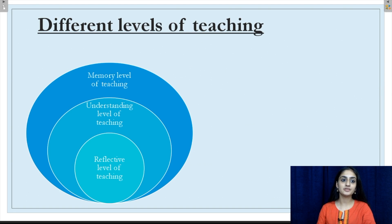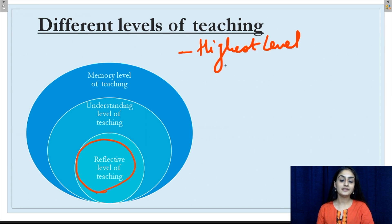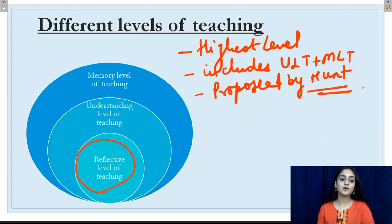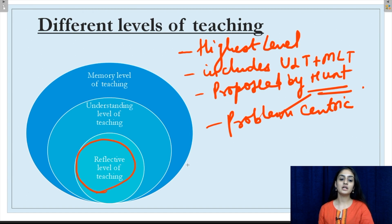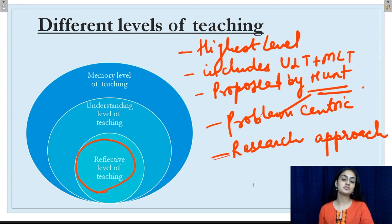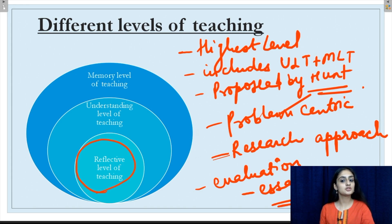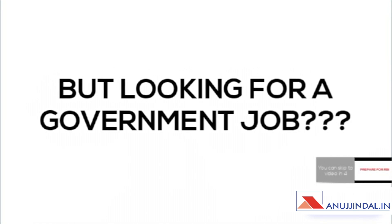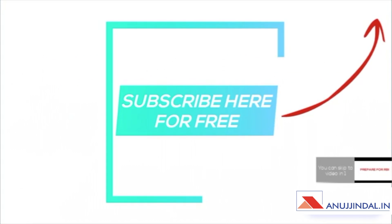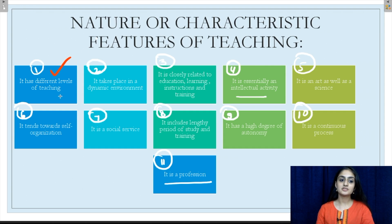Moving on to the reflective level of teaching. This is the highest level of teaching and it includes both ULT and MLT. This was proposed by Hunt and it is a very problem-centric approach to teaching. Students are required to adopt a research approach in order to solve problems. The main aim of this level is to bring about a reflective power in the student so they can solve life problems by reasoning, logic and basic imagination. The evaluation method is essay type, and the attitude, belief and involvement of a student is also evaluated.